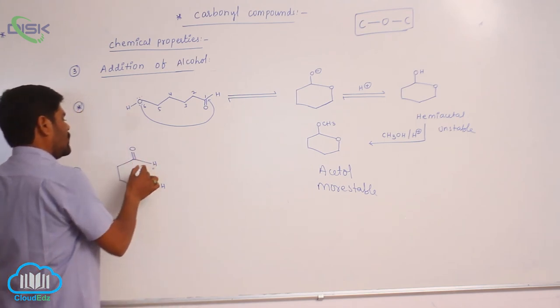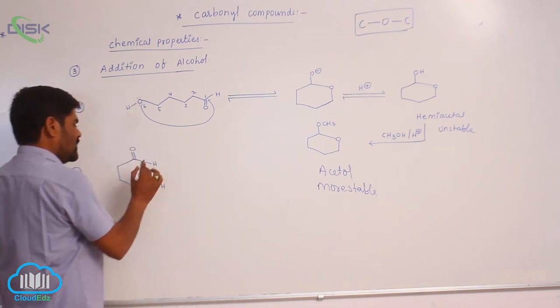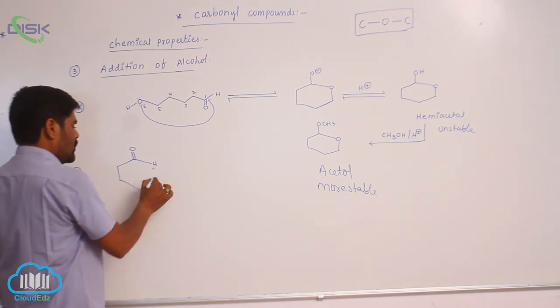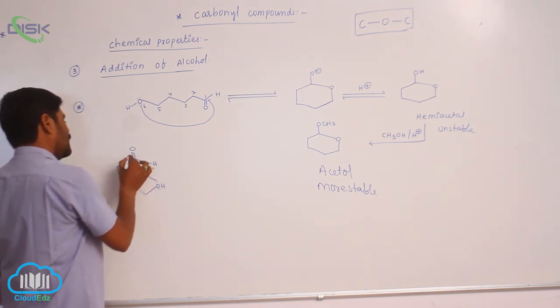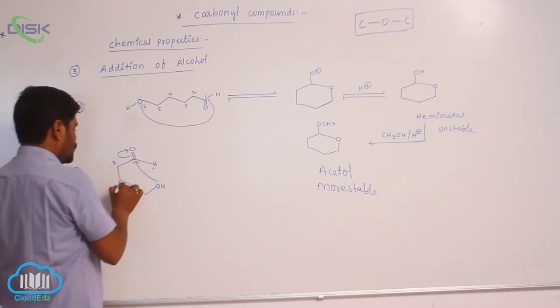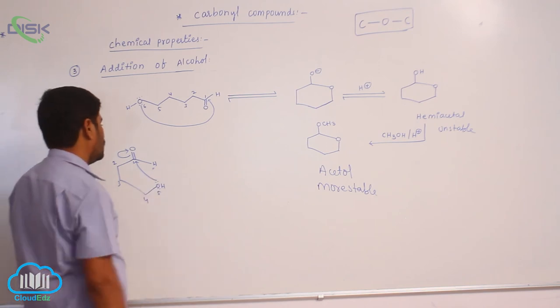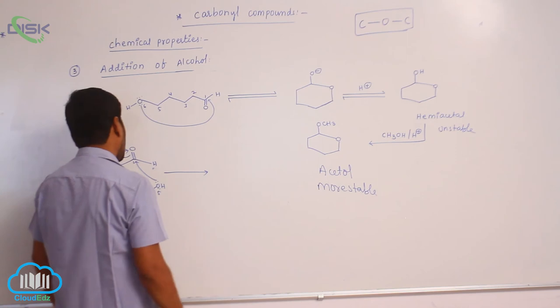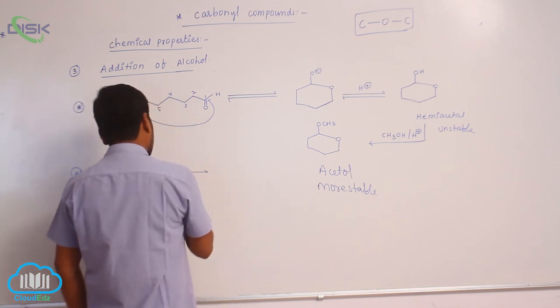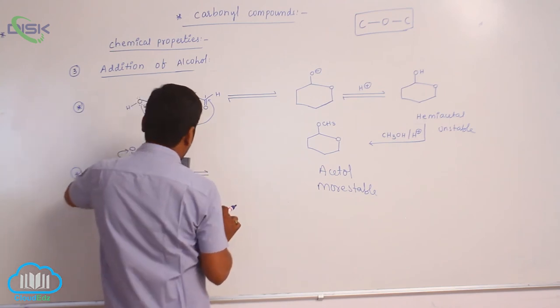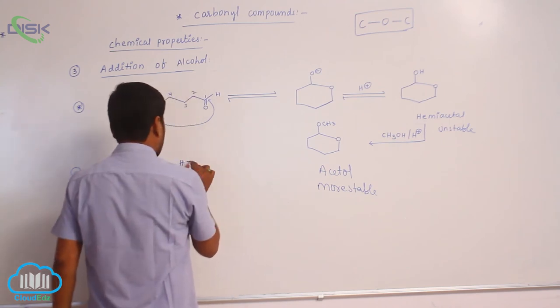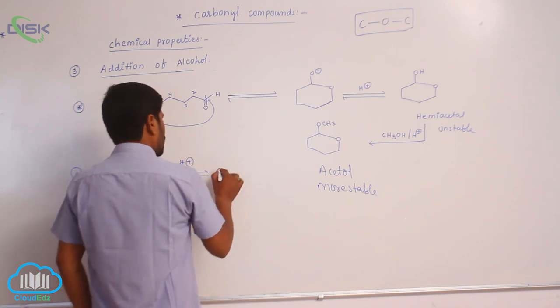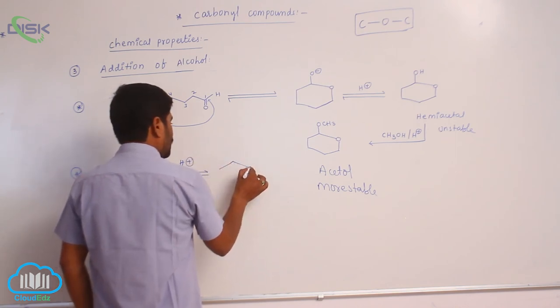So, same molecule contained aldehyde functional group as well as what, alcohol. Now intramolecular, so 1, 2, 3, 4, 4, 5. Now, in presence of acid medium, which membered ring is formed, a 5 membered ring is formed.